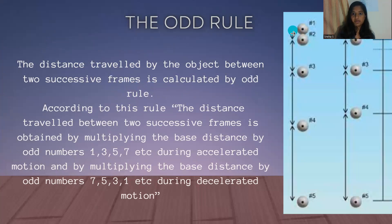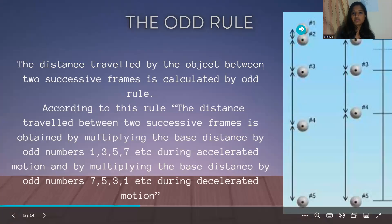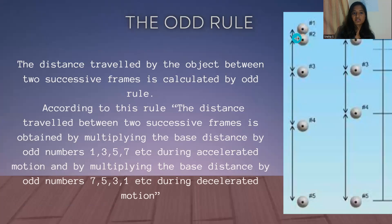When we consider frame 1, frame 2, frame 3, frame 4, and frame 5, the distance between frame 1 and frame 2 is calculated using the odd rule. According to this rule, the distance traveled between two successive frames is obtained by multiplying the base distance by odd numbers — 1, 3, 5, 7 — during accelerated motion, and by multiplying the base distance by odd numbers — 7, 5, 3, 1 — during decelerated motion.